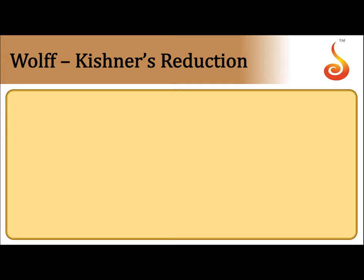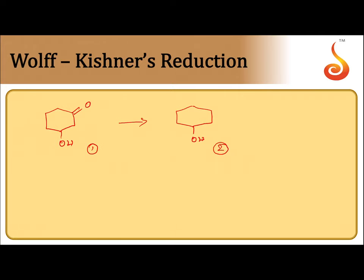Wolff-Kishner reduction is widely used when the carbonyl compounds are sensitive to acids. For example, if I take a compound with an OH group and want to reduce only the C=O group to CH₂ while the OH should not be affected, I should use hydrazine and potassium hydroxide.